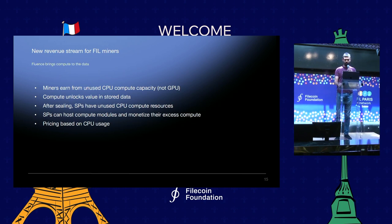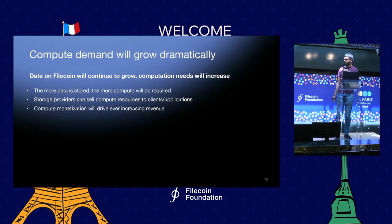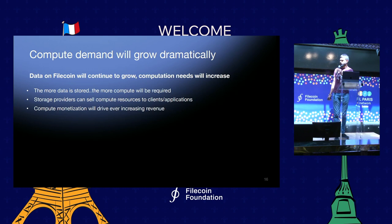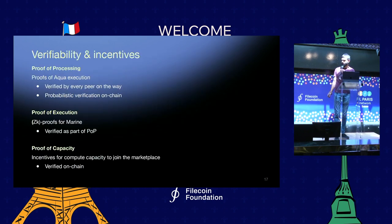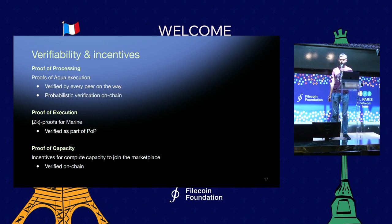After sealing, CPU is free, and compute providers can monetize CPUs. We expect that compute demand will grow because more data means more need to compute, more different jobs. Monetization will increase revenue. And to have this revenue from useful work made on the network, we need verifiability — we need a variety of proofs to distribute the incentives.